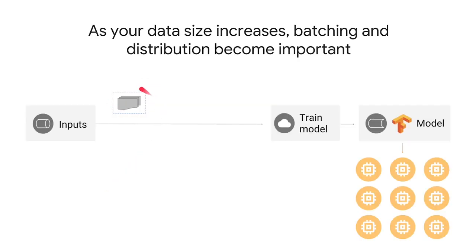As your data size increases, batching and distribution become extremely important. You will need to take your data and split it into batches, and then distribute your training over many machines. This is not as simple as MapReduce where things are embarrassingly parallel — gradient descent optimizations are not embarrassingly parallel. You will need parameter servers that form a shared memory that's updated during each epoch. Sometimes people think they can take a shortcut by getting a bigger and bigger machine with lots of GPUs, but they often live to regret that decision because at some point you will hit the limit of whatever single machine you're using.